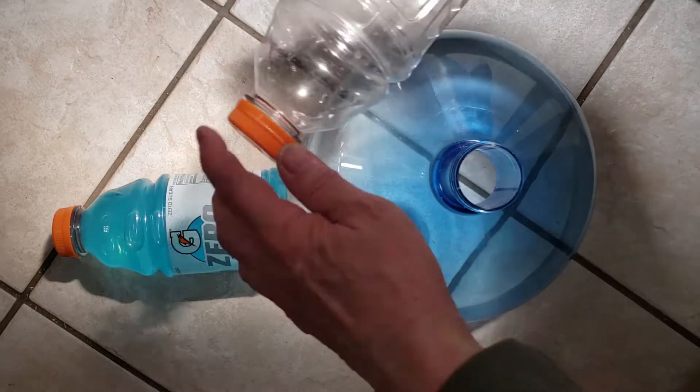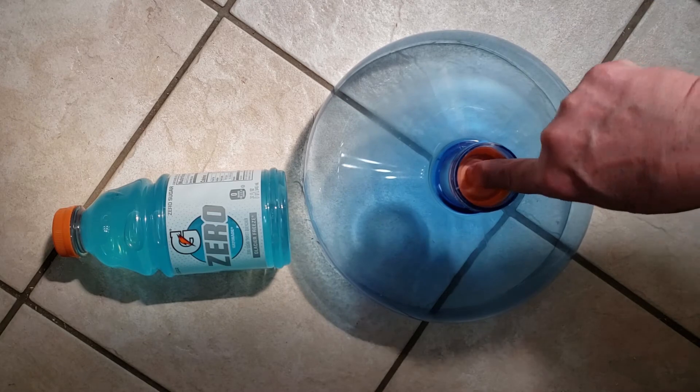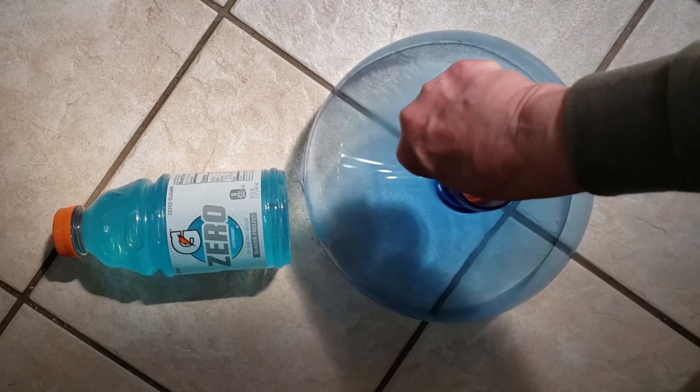For a round-bottle beehive, take the cap from a 32-ounce Gatorade bottle. Test that it will fit through the top opening of your bottle's spout. It should be a snug fit.